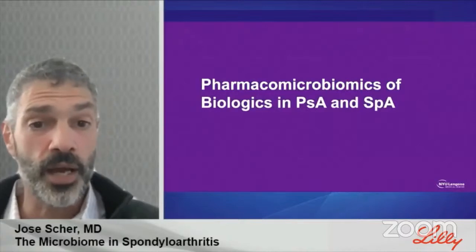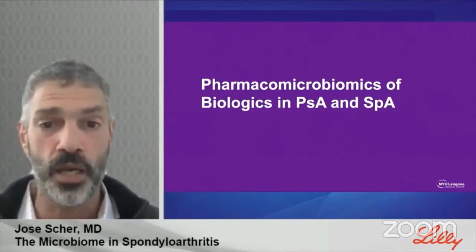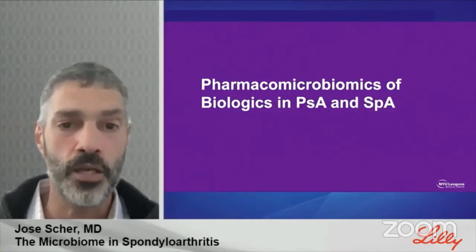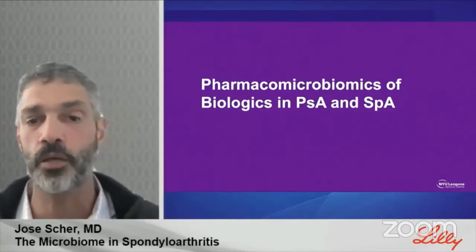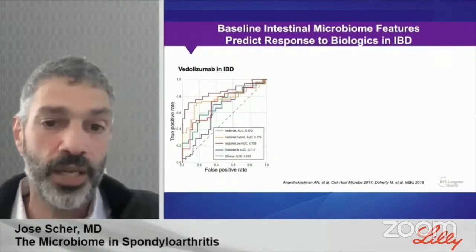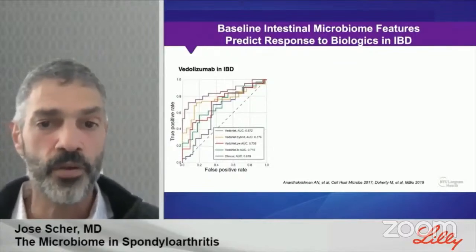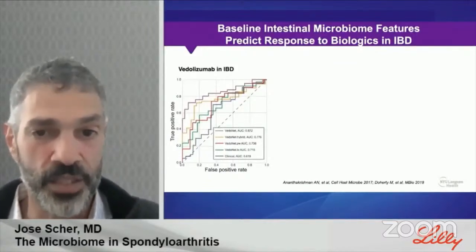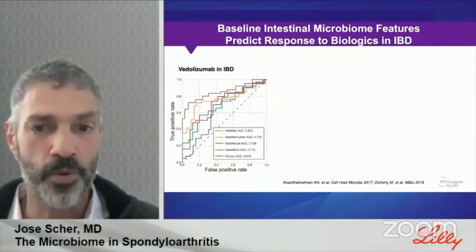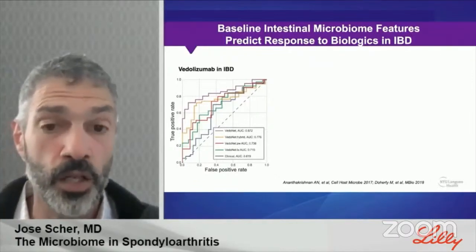Switching gears to pharmacomicrobiomics — a new discipline that investigates the effects of variations within the human microbiome on the drugs we prescribe. This work was pioneered in the oncology field but also in the IBD field. Using machine learning algorithms predicting which patients will achieve steroid-free remission in both ulcerative colitis and Crohn's disease, you can see that algorithms incorporating gut microbiome features improved predictive value.